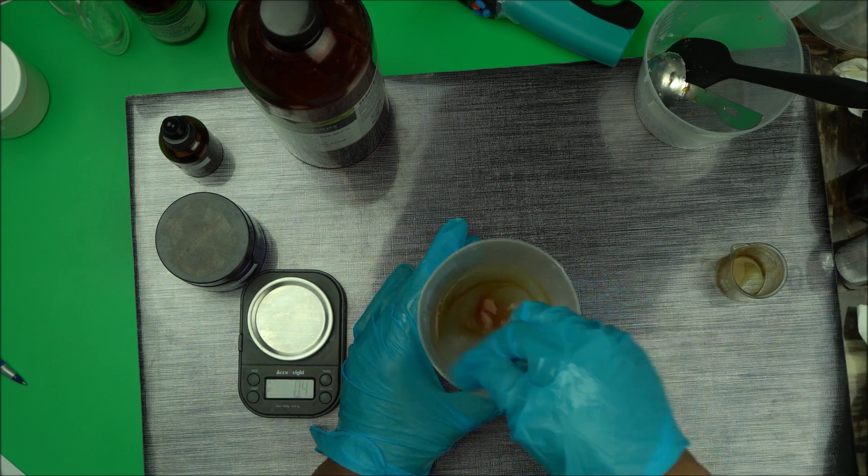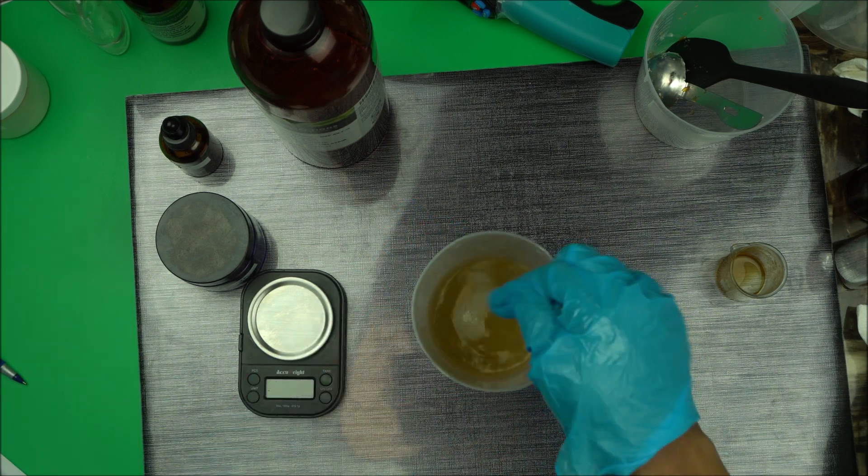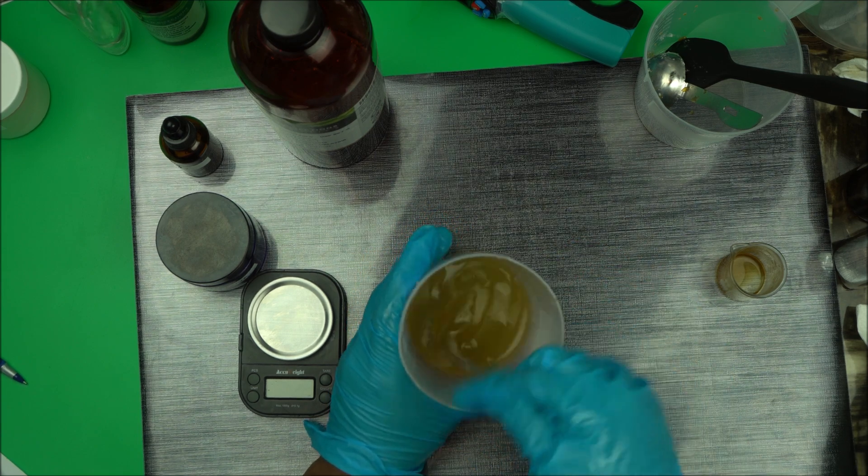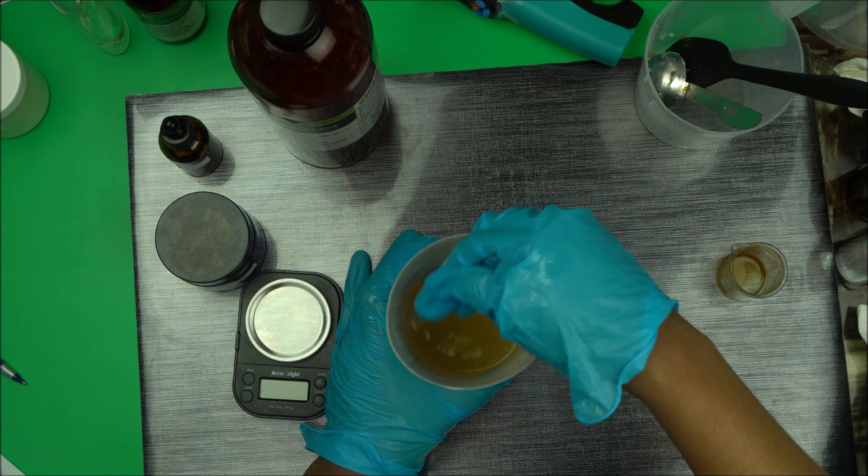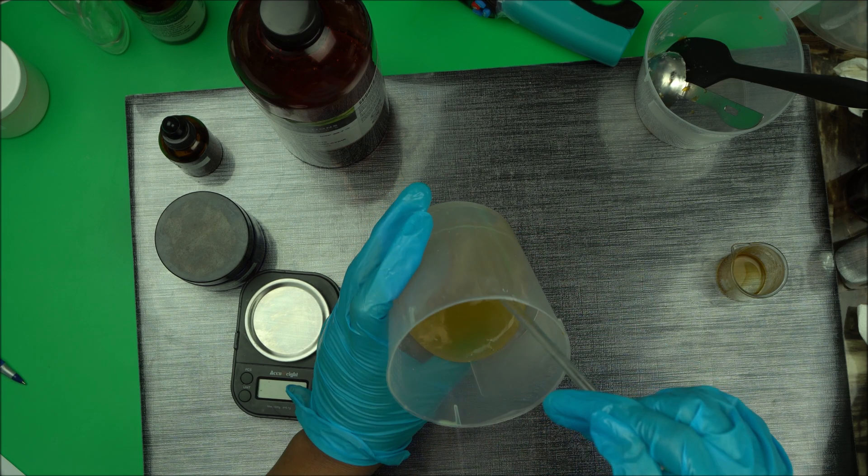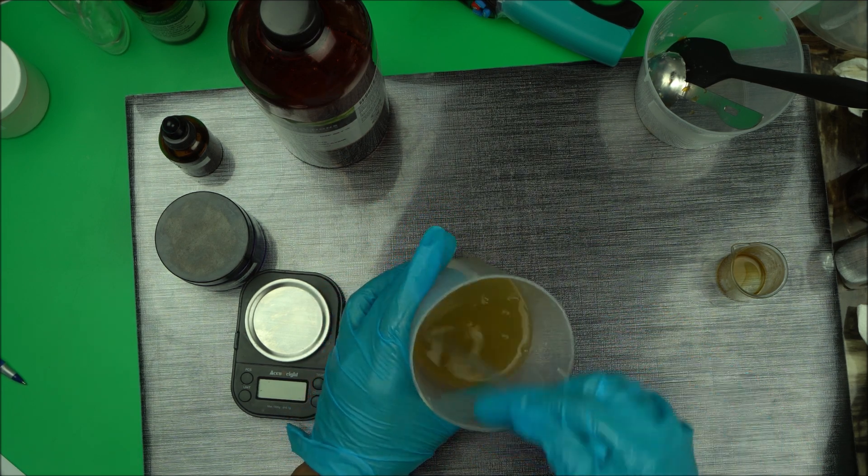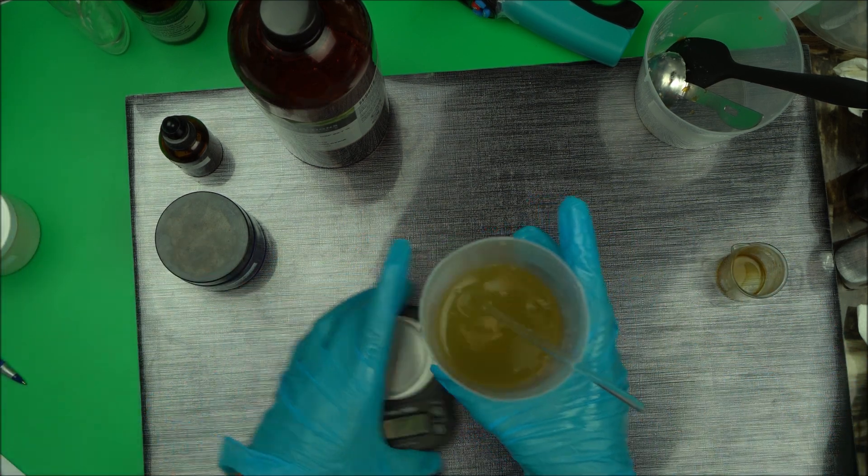Then you mix it well. As you can see, it does change color because the papaya powder is brown, so it has changed color. That's perfect, and that's your serum. As you can see it's gel, it looks jelly because I used xanthan gum. Very simple to make.